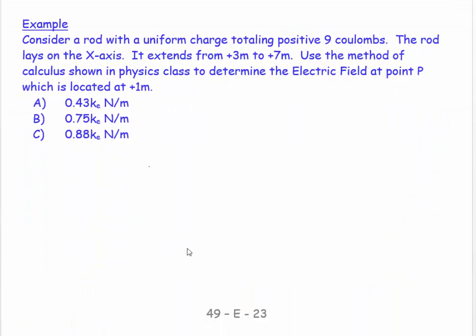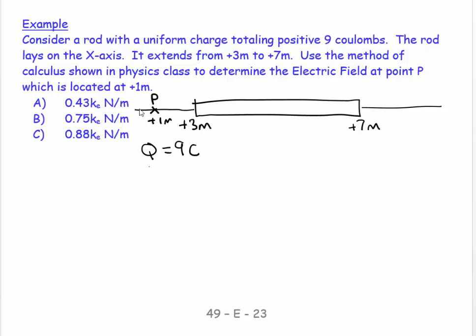So we have an example of this. Let me step through this. Consider a rod with a uniform charge of 9 coulombs. The rod lays along the x-axis. Q is equal to 9 coulombs. And the rod extends from plus 3 meters to plus 7 meters. Use the method of calculus as shown in physics class to determine the electric field at point P, which is located at plus 1. So here's my point P, and it's at plus 1 meters.